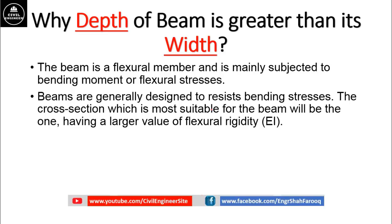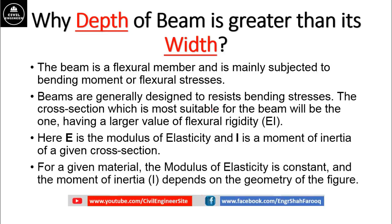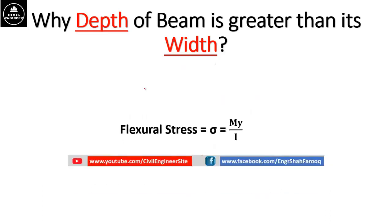Here, E is the modulus of elasticity and I is the moment of inertia of a given cross section for a beam. For a given material, the modulus of elasticity is constant and the moment of inertia depends on the geometry of the figure. We know that flexural stress is equal to M·Y divided by I.